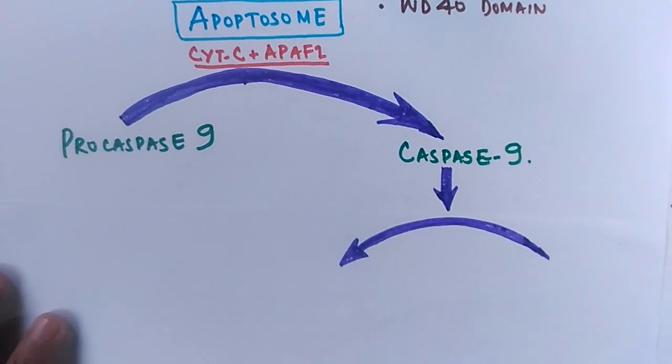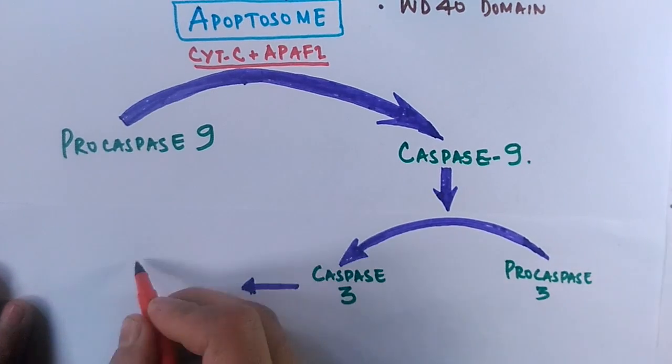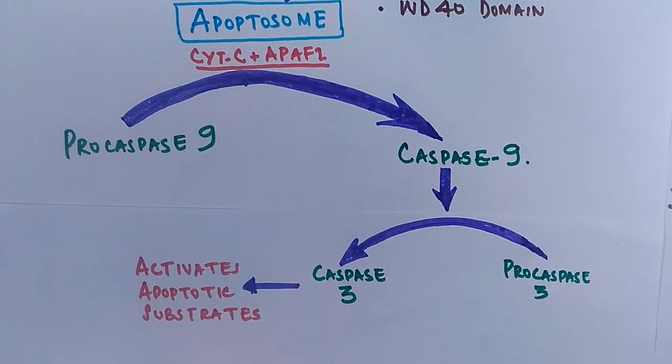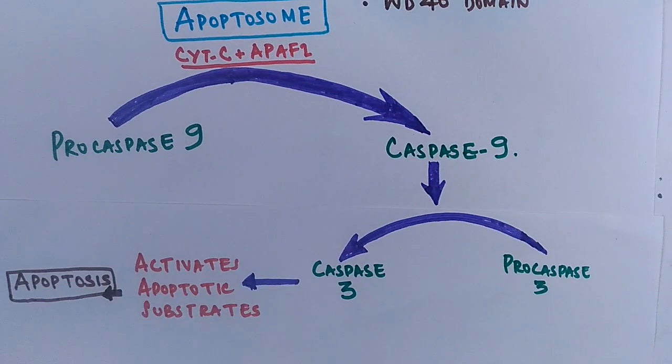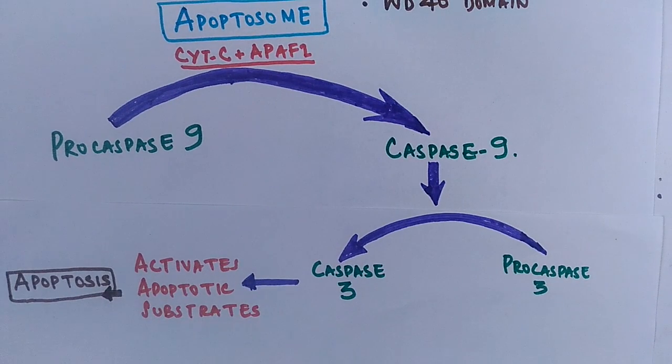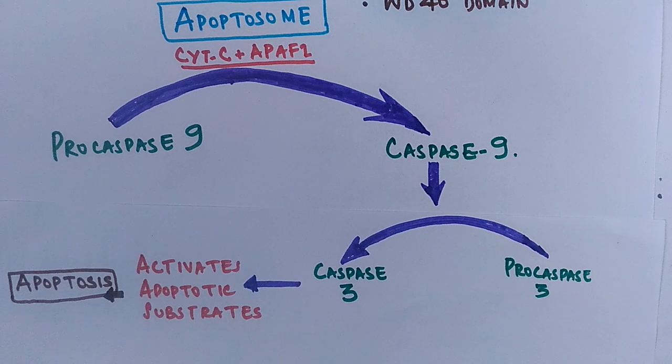Caspase 9 in turn activates the caspase 3, and this caspase 3 ensures the activation of apoptotic substrates like DNases that degrade the DNA ultimately, and we say this is programmed cell death, that's apoptosis of the cell.